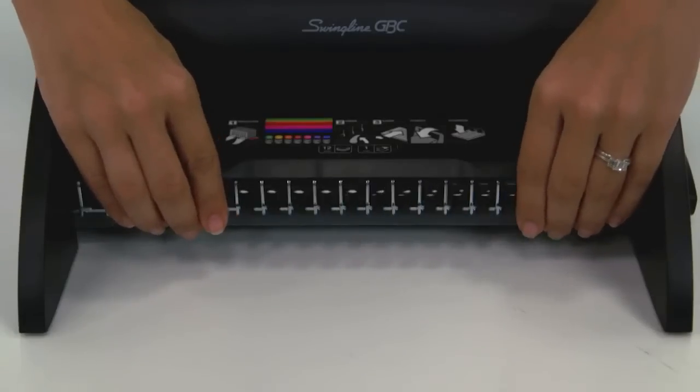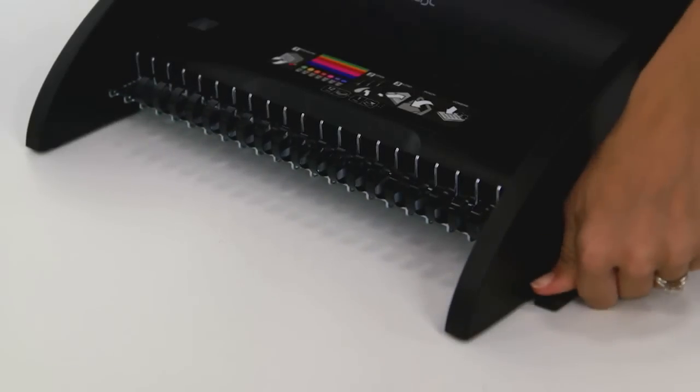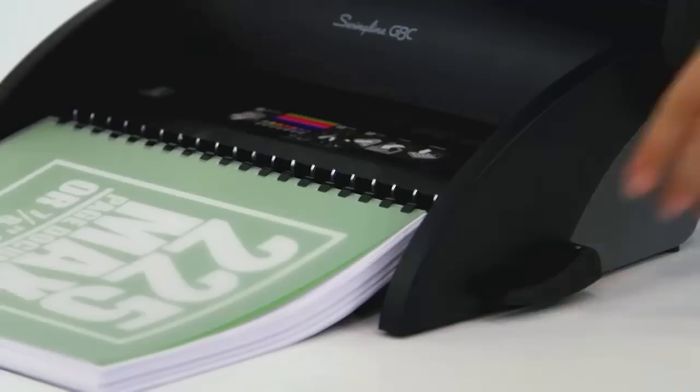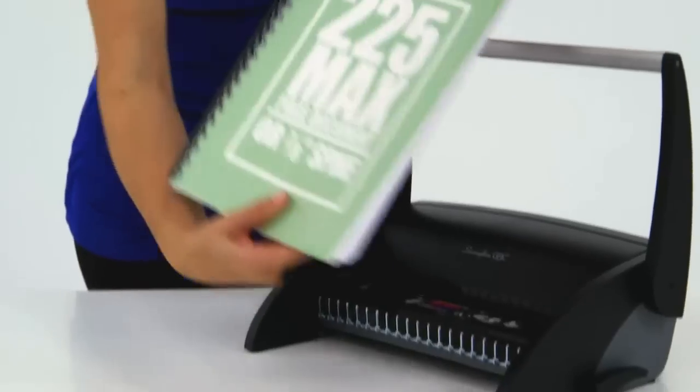Load the spine onto the C12. Open the spine by turning the handle on the side of the machine. Place your cover and punched document onto the spine. Return the handle to its starting position and you have a finished document.